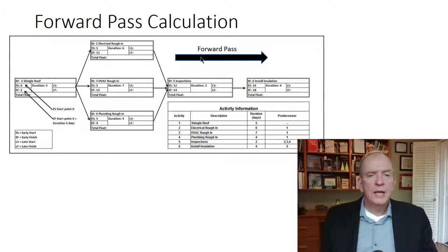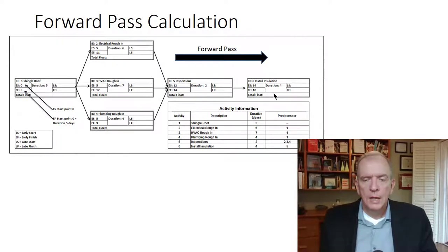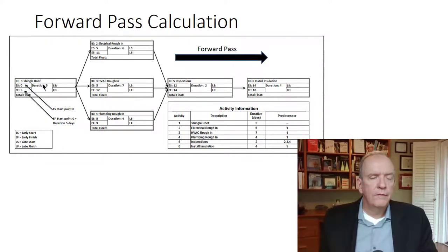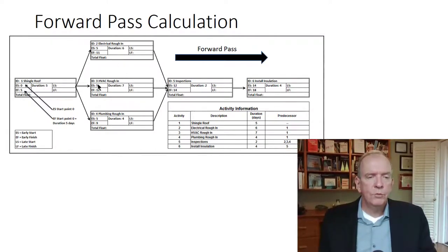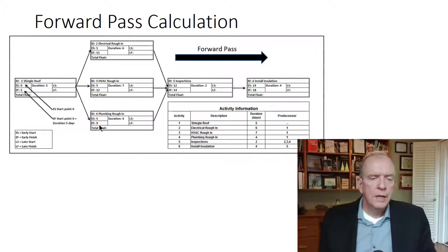The software does the forward pass before the backward pass, starting at the beginning and working through the network to the end. So following that process: early start is zero, duration is five days, zero plus five is five — that's the early finish. The early finish then becomes the early start for the next activity. When activities diverge outward, we plug that five into all three of them. Then we continue: five plus six equals eleven, five plus seven equals twelve, and five plus four equals nine.